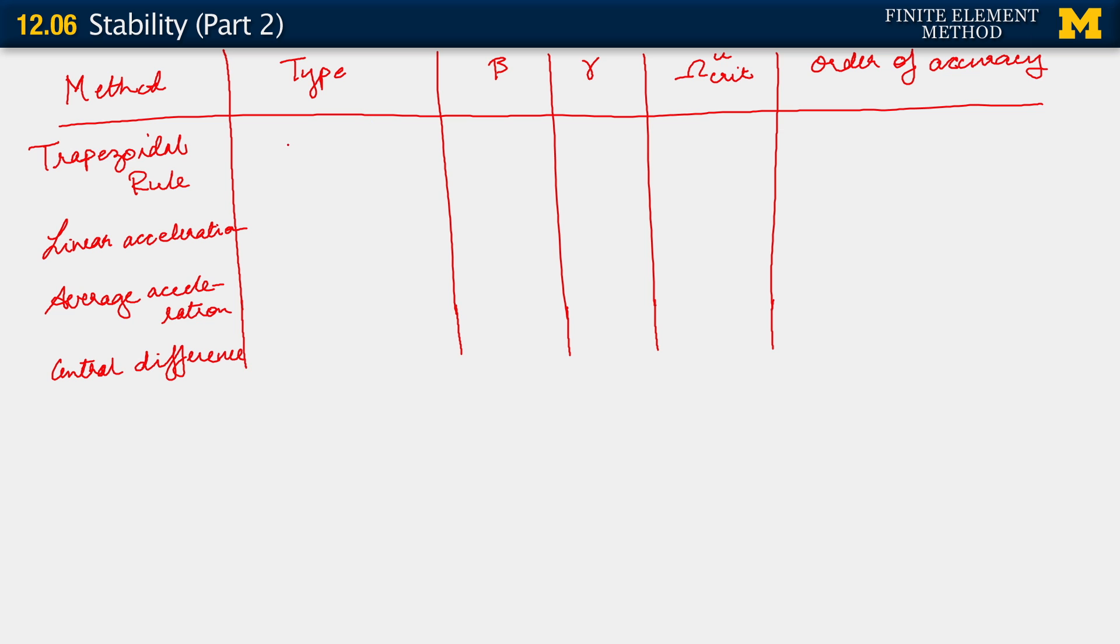All of these methods are implicit except for the central difference method. Now, stability. They all use gamma equals half.